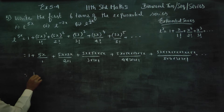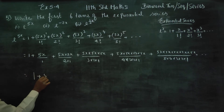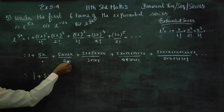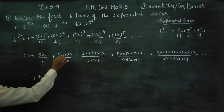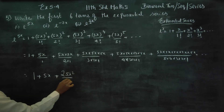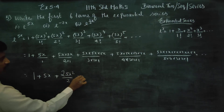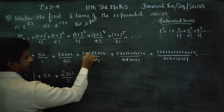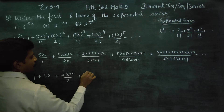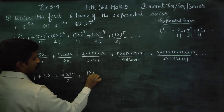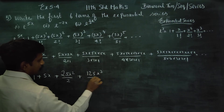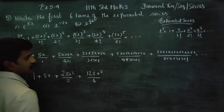Your final answer will be 1 plus 5x. You can cancel the 2s, giving 25x square by 2. For the cube term: 5 into 5 into 5 is 125, so 125x cube by 6. For the x power 4 term: 5 into 5 into 5 into 5 is 625, by 4 factorial which is 24.